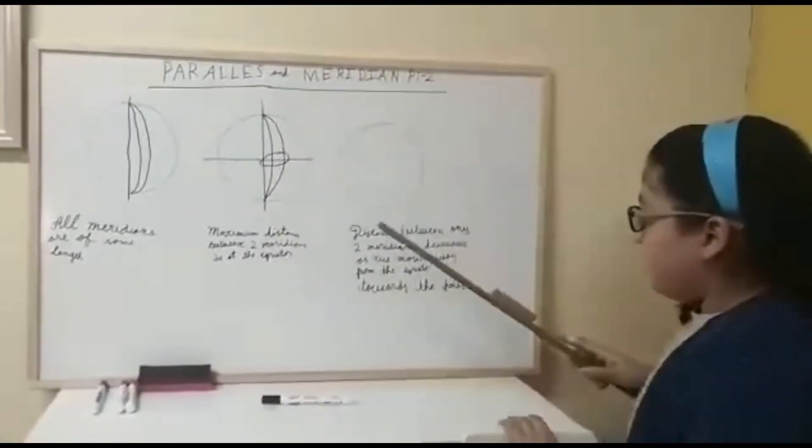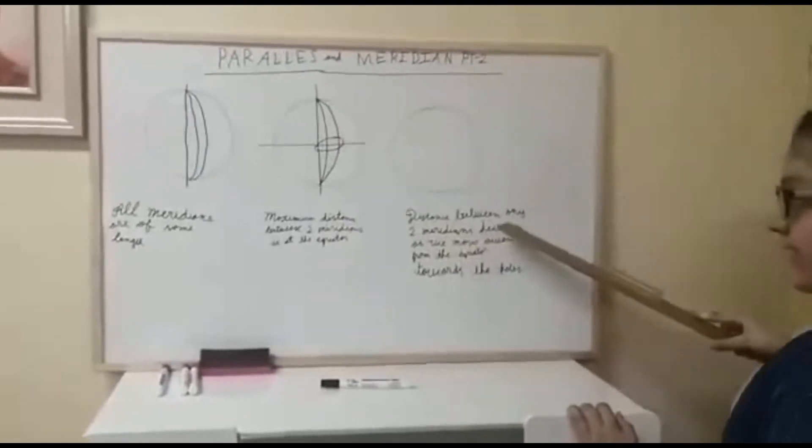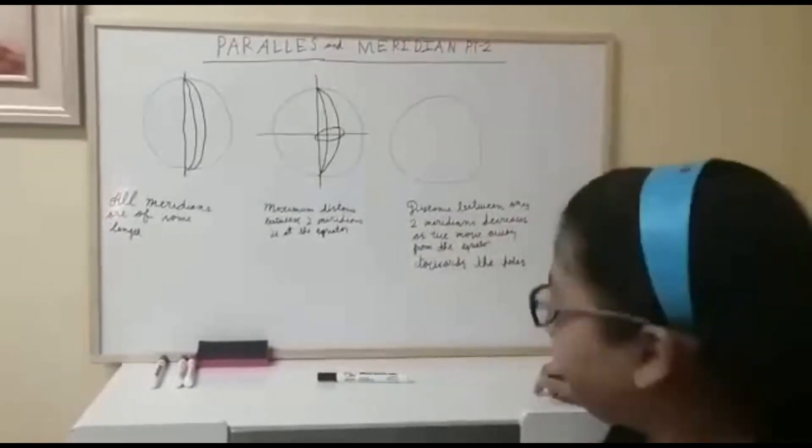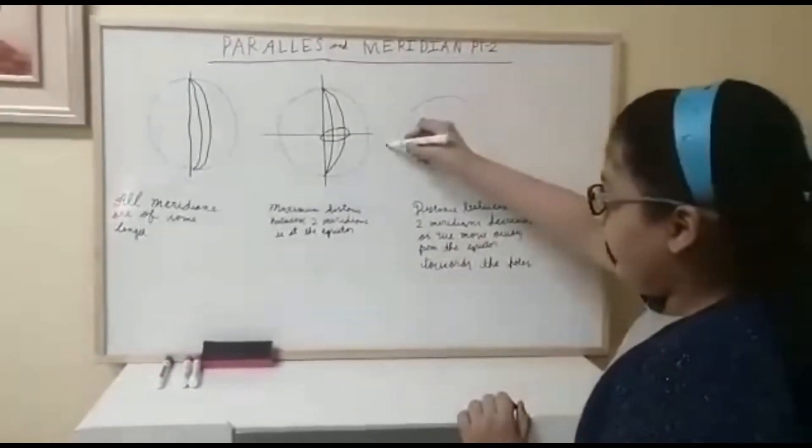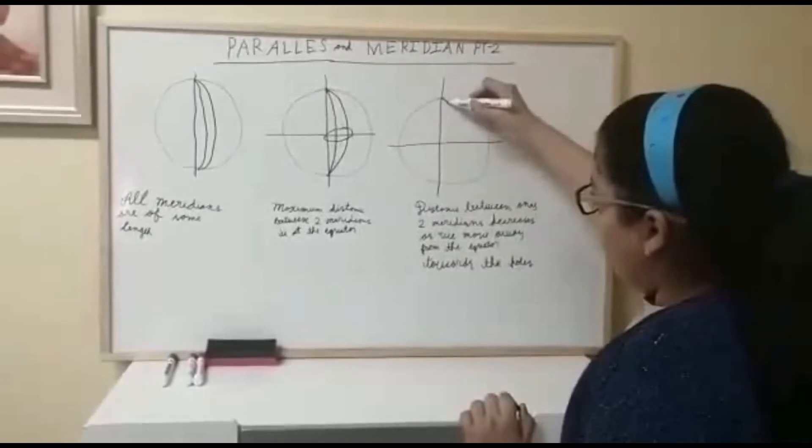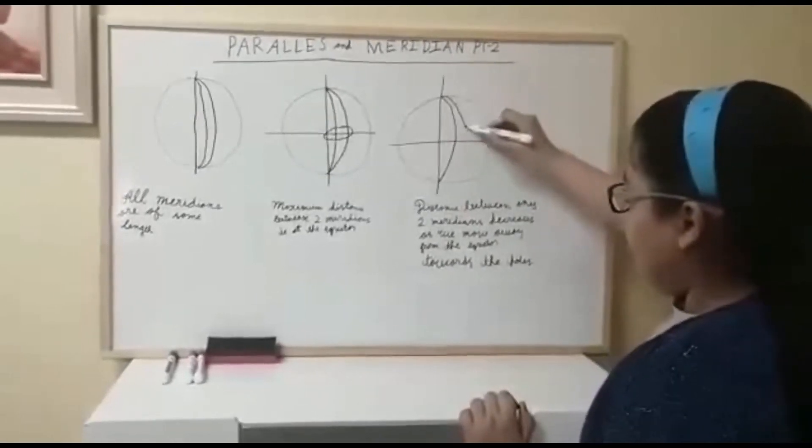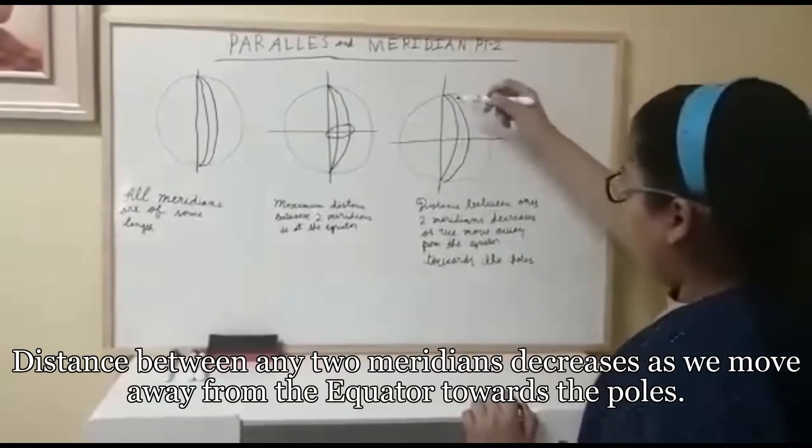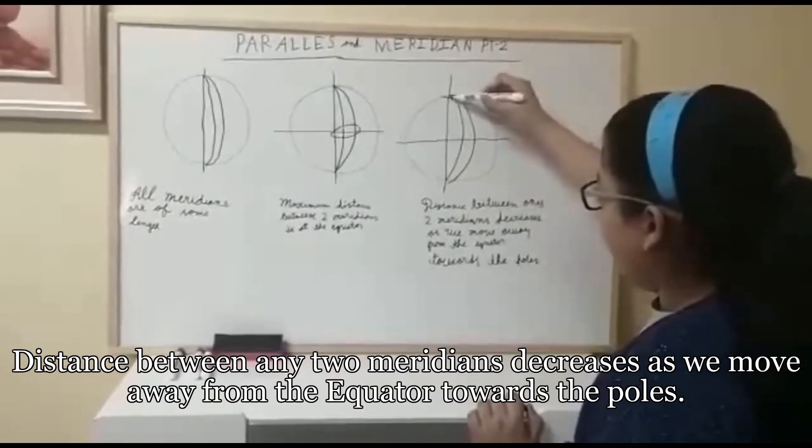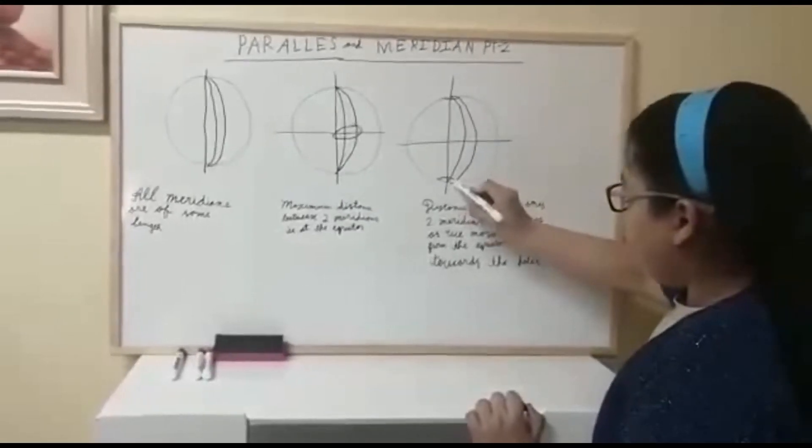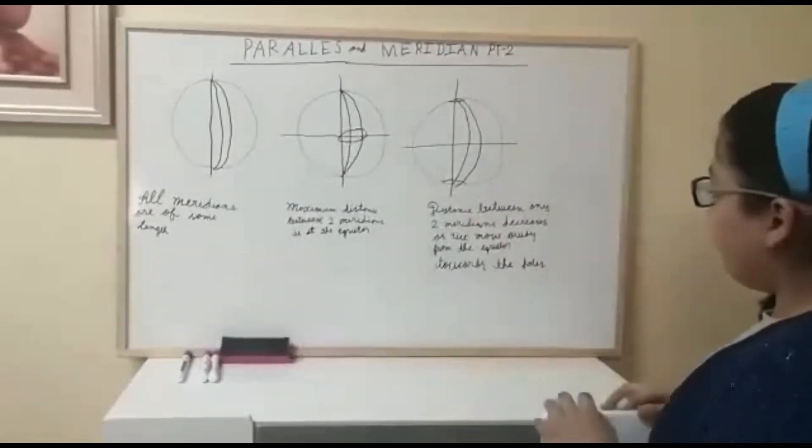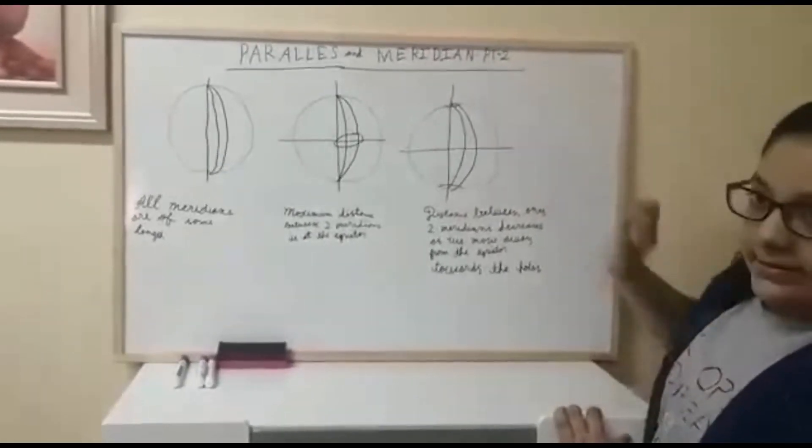The third feature is distance between any two Meridians decreases as we move away from the equator towards the poles. Please show. First we are going to draw the equator and then the prime Meridian. And we are going to draw the Meridians. So here you can see that the very small distance is over here near the poles. So as we move away from the equator the distance decreases.